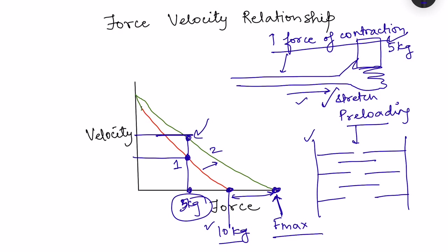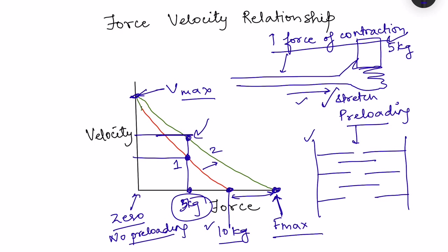However, V-max has not changed. V-max corresponds to zero load — there is no preloading, so the muscle contracts with its inherent strength without any stretch. That is why V-max remains the same and constant. But even with a little bit of stretching, the velocity of shortening is a little bit more. So this was about the force-velocity relationship in a preloaded condition.